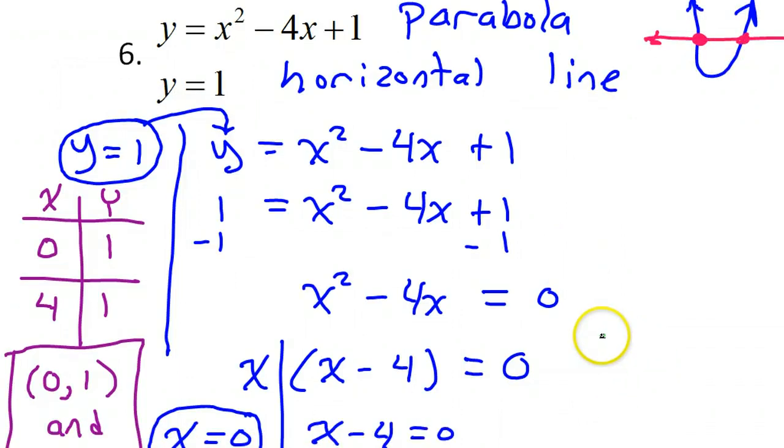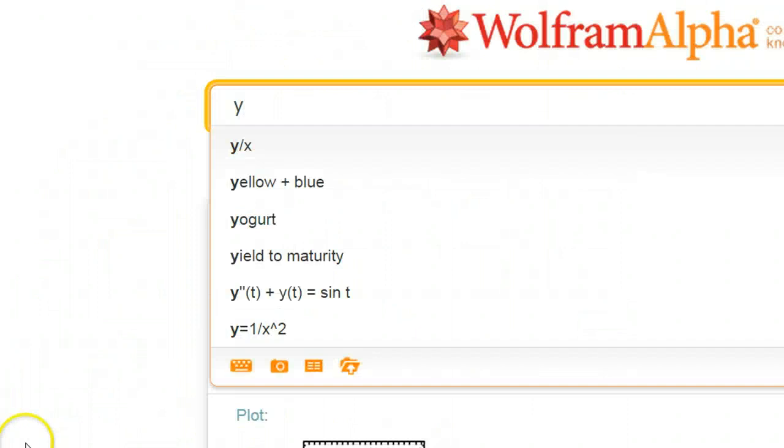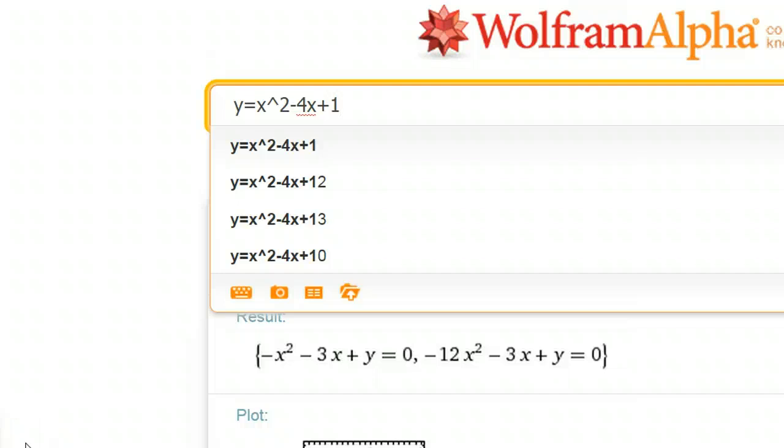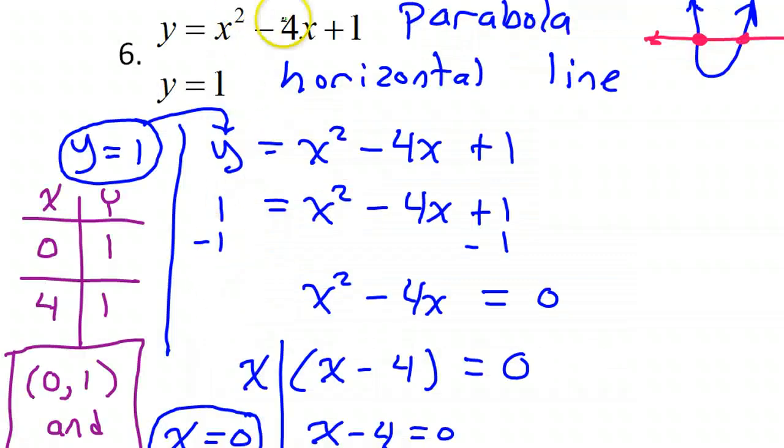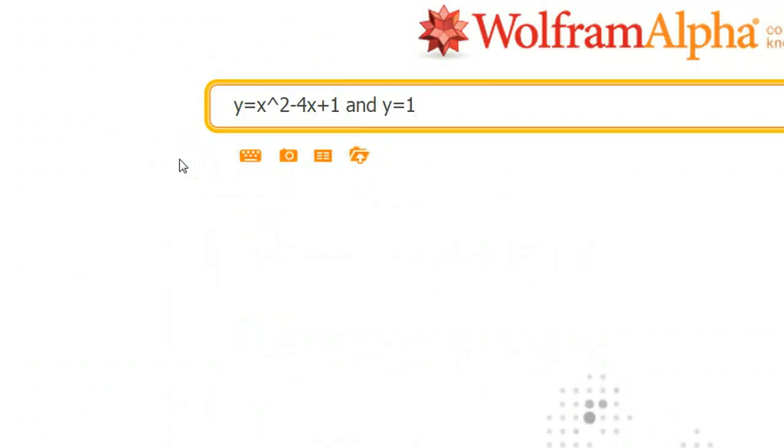I need y equals x squared. You have to use a caret. Minus 4x plus 1. I think that was it. x squared minus 4x plus 1. And y equals 1. So I will just type and y equals 1. Let's take a look.